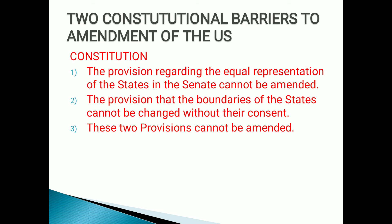There are two constitutional barriers to amendment of the US constitution — two limitations on the amending power of Congress and the states. First, the provision regarding the equal representation of the states in the Senate cannot be amended. Second, the provision that the boundary of a state cannot be changed without its consent. These two provisions can never be amended.